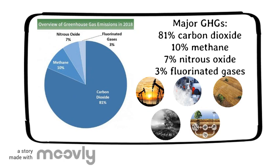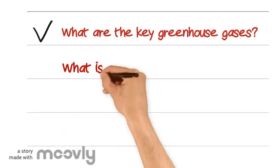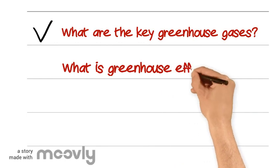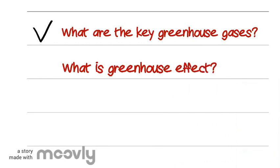Unlike other greenhouse gases, fluorinated gases have no natural sources, and they nearly exclusively result from human activities, such as using the fridge and aerosol cans.